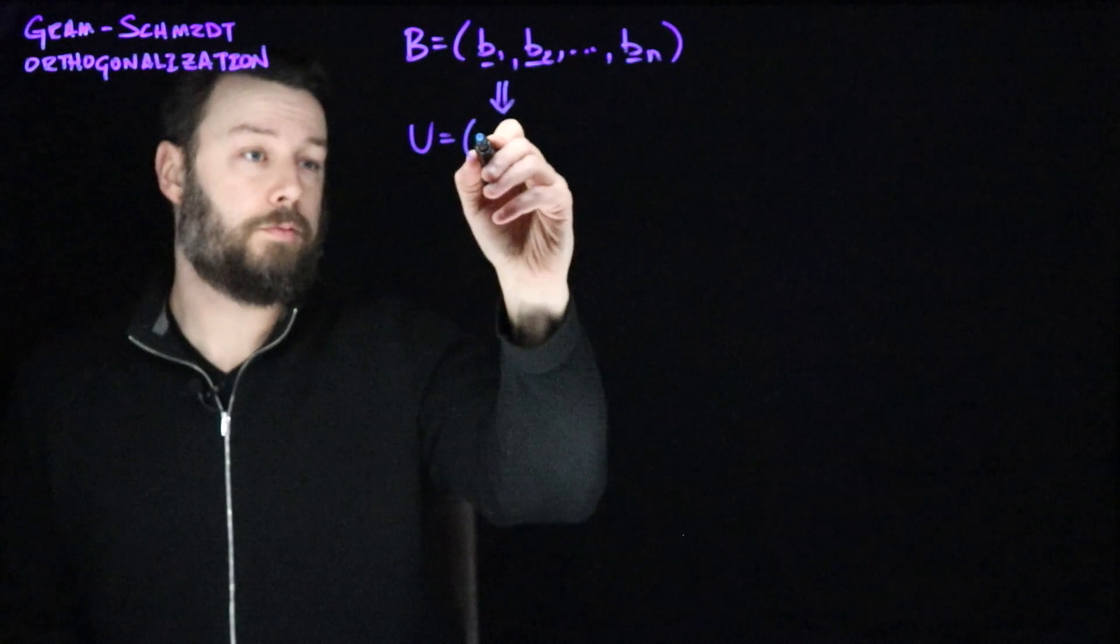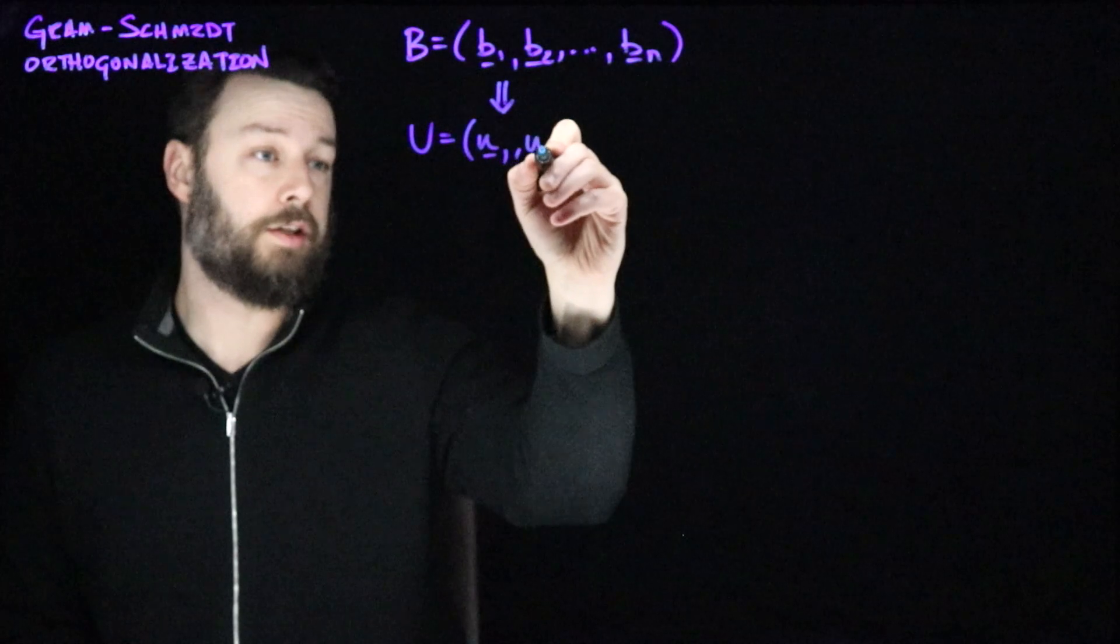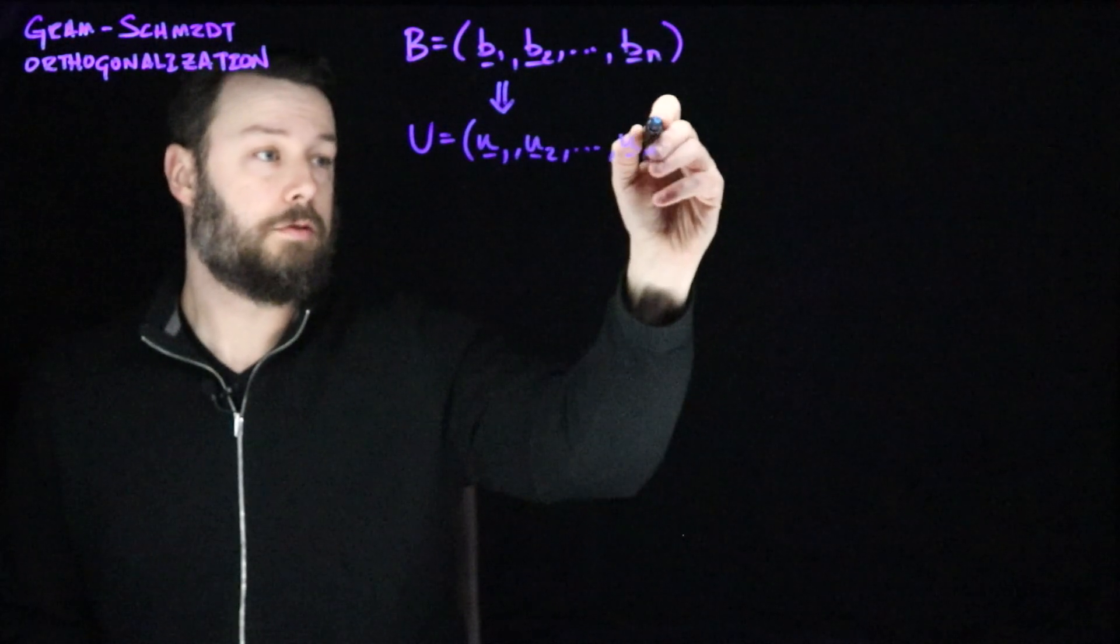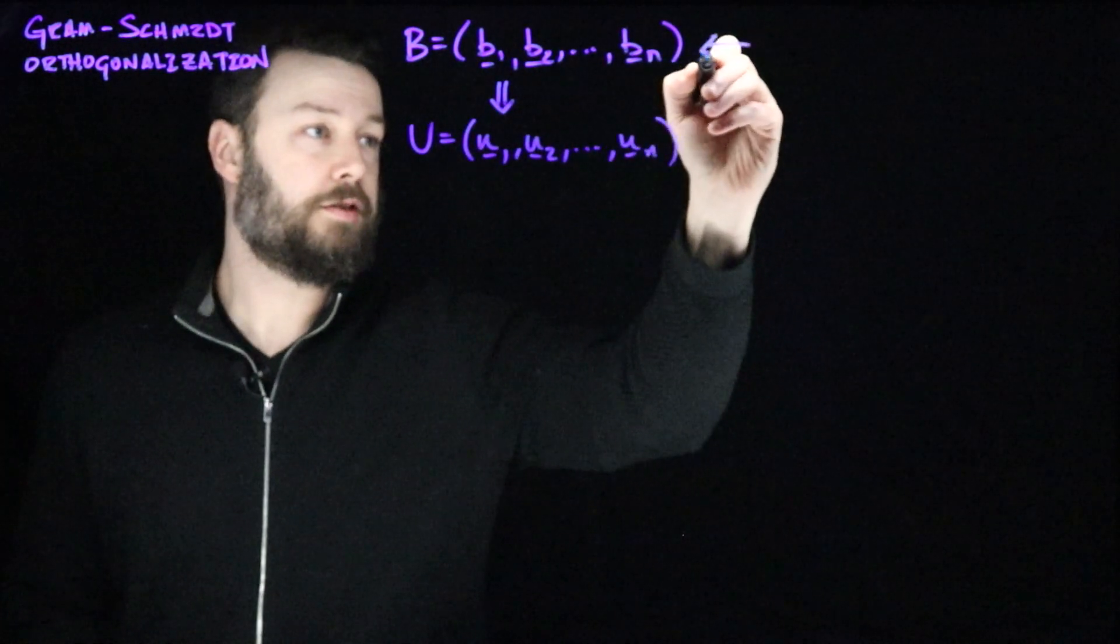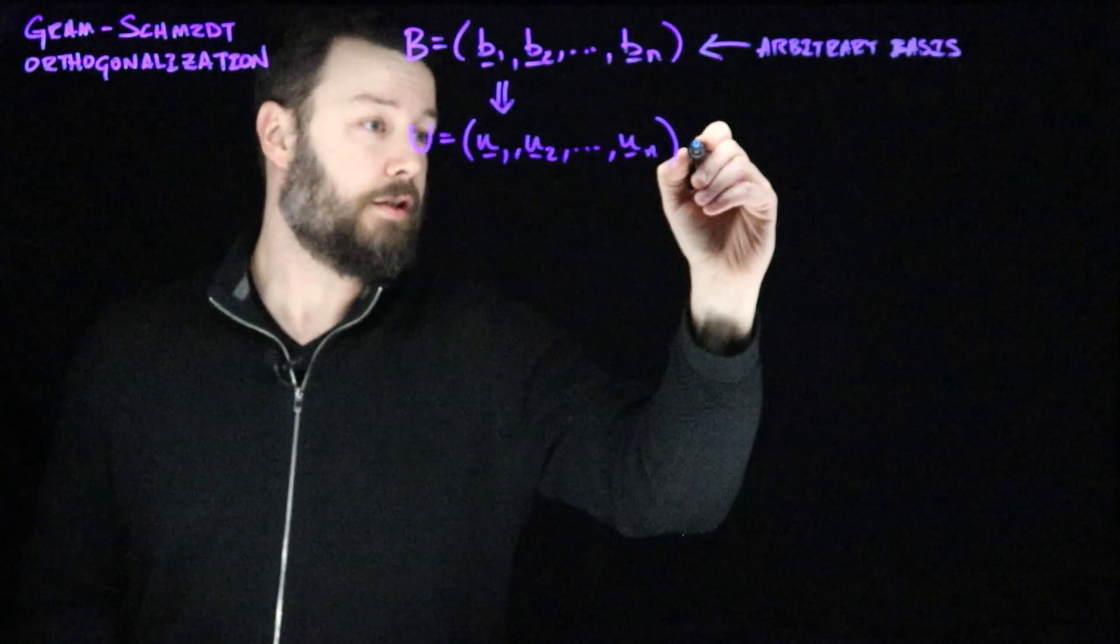So where we get a sequence of vectors, also n vectors: u1, u2, out to un. The idea here, this is an arbitrary basis. And this one is an orthogonal basis.